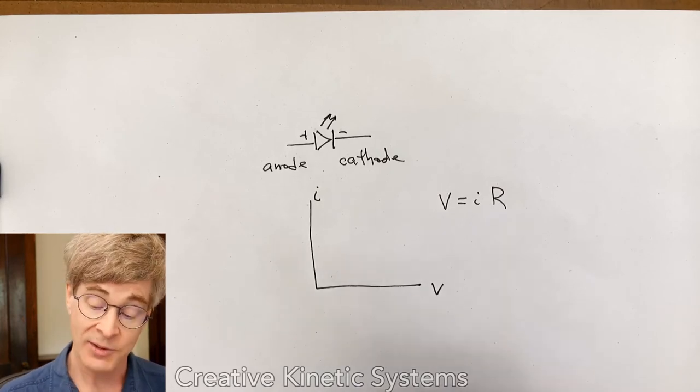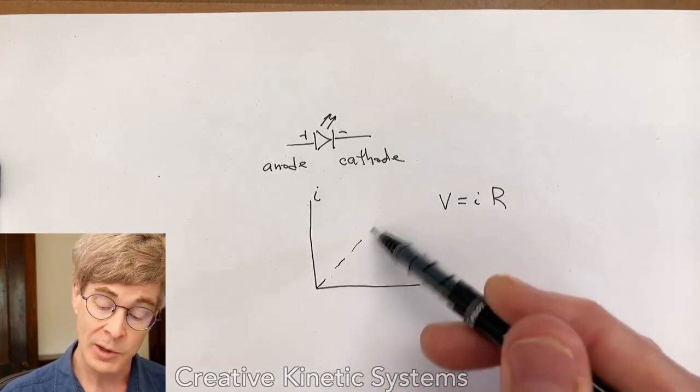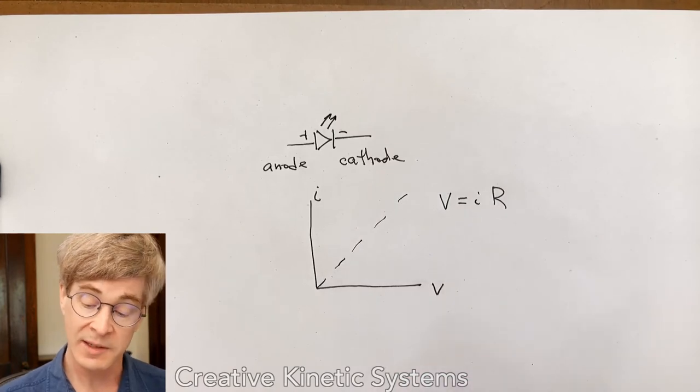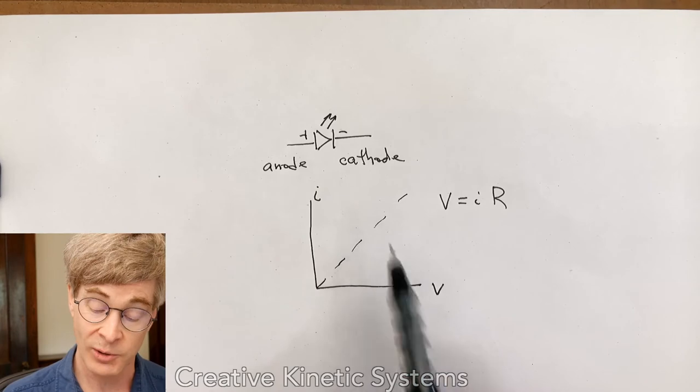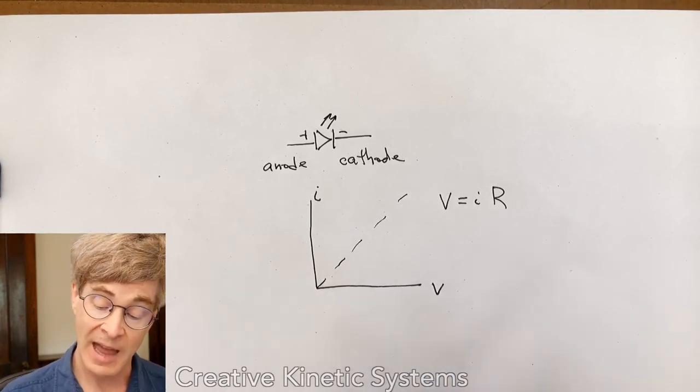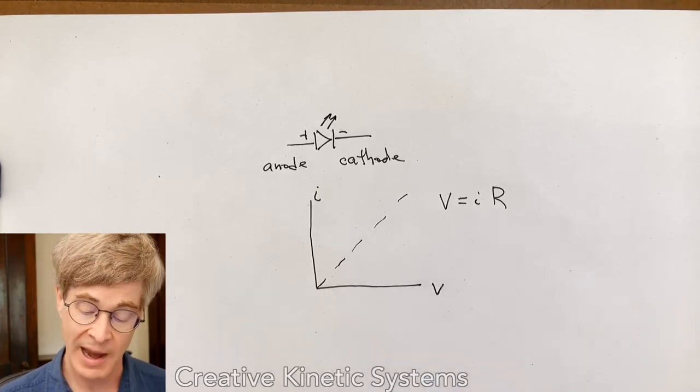this relationship is, R is effectively constant. And so there's a line that is formed. So for some resistance value, as the voltage increases, the current goes up linearly with the voltage. And that property holds over the range that we care about.